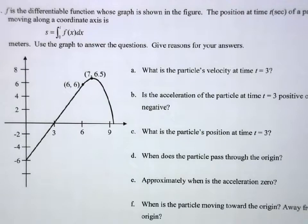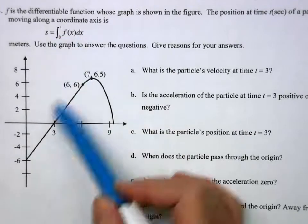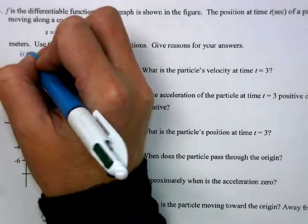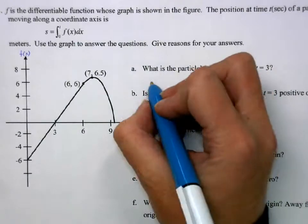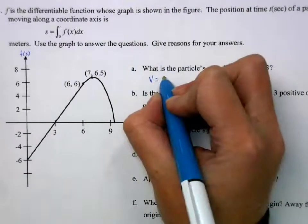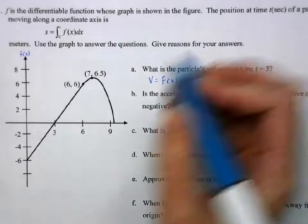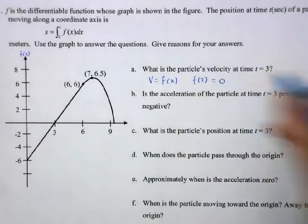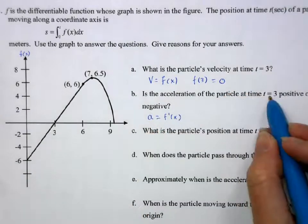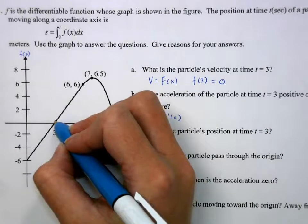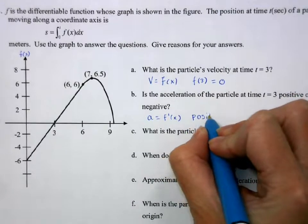The position of a particle is given by the integral from 0 to t of f of x, with f of x shown on the graph. The particle's velocity at t equals 3: velocity is the derivative of position, so velocity equals f of x, and f of 3 equals 0. The acceleration is f prime of x — the slope at t equals 3. The slope is positive because the graph is increasing there.